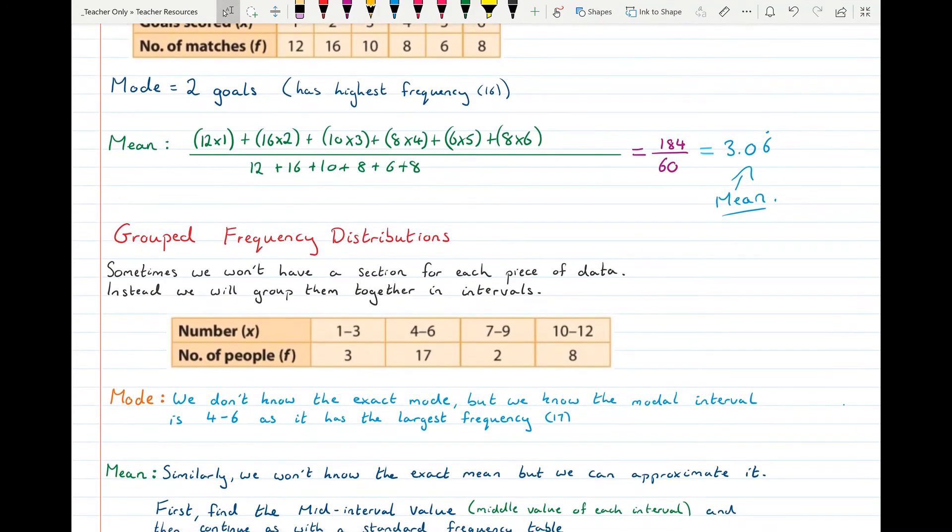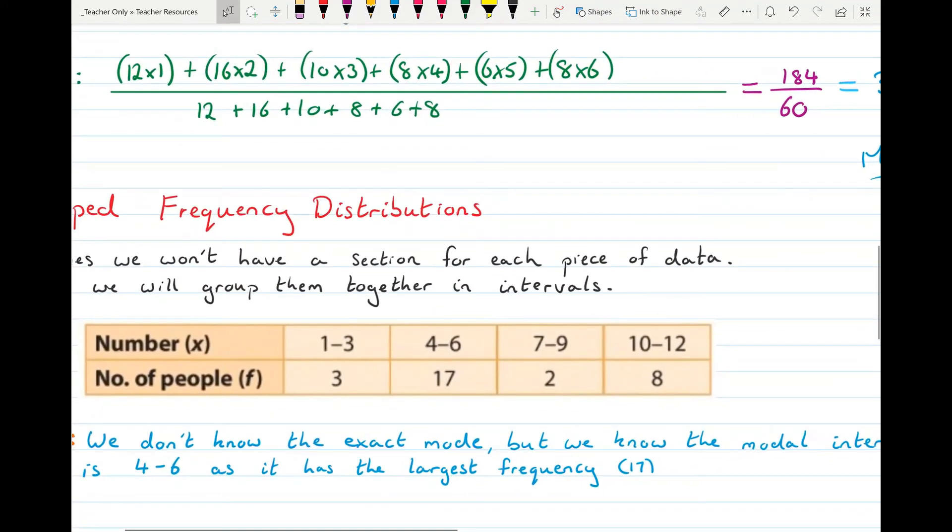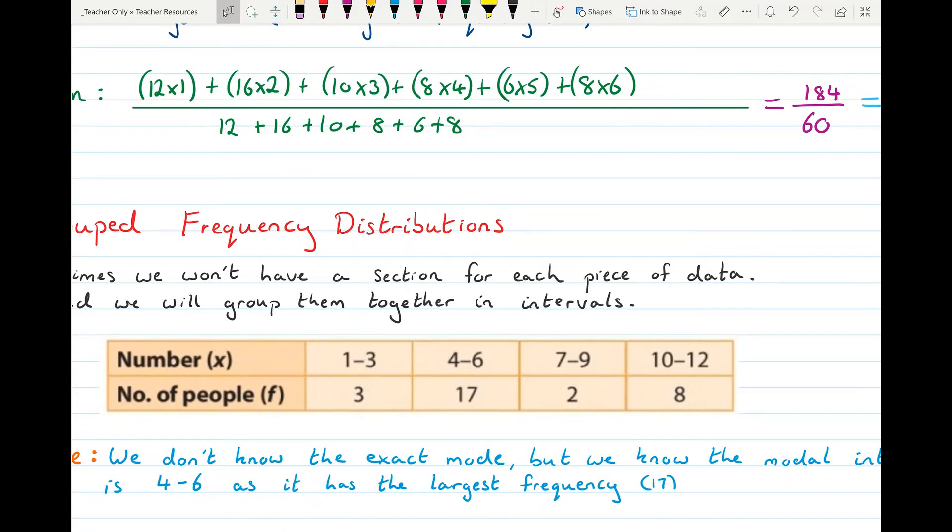Here's an example of a grouped frequency table where we have the intervals. So from 1 to 3 is our first interval. So the numbers 1, 2 and 3 will all go into that first interval. And then our second interval goes from 4 to 6. Our third interval goes from 7 to 9 and our fourth interval goes from 10 to 12.